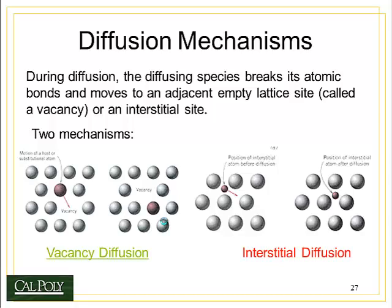The other diffusion mechanism is interstitial diffusion. In this case, an impurity atom occupies an interstitial site and moves from that interstitial site to another nearby interstitial site, resulting in a net movement of material. The temperature can be much lower because we don't have to create the interstitial sites — they naturally exist within the crystalline lattice. In addition, the atoms moving via interstitial diffusion are always going to be very small, such as carbon, nitrogen, oxygen, boron, and so on.